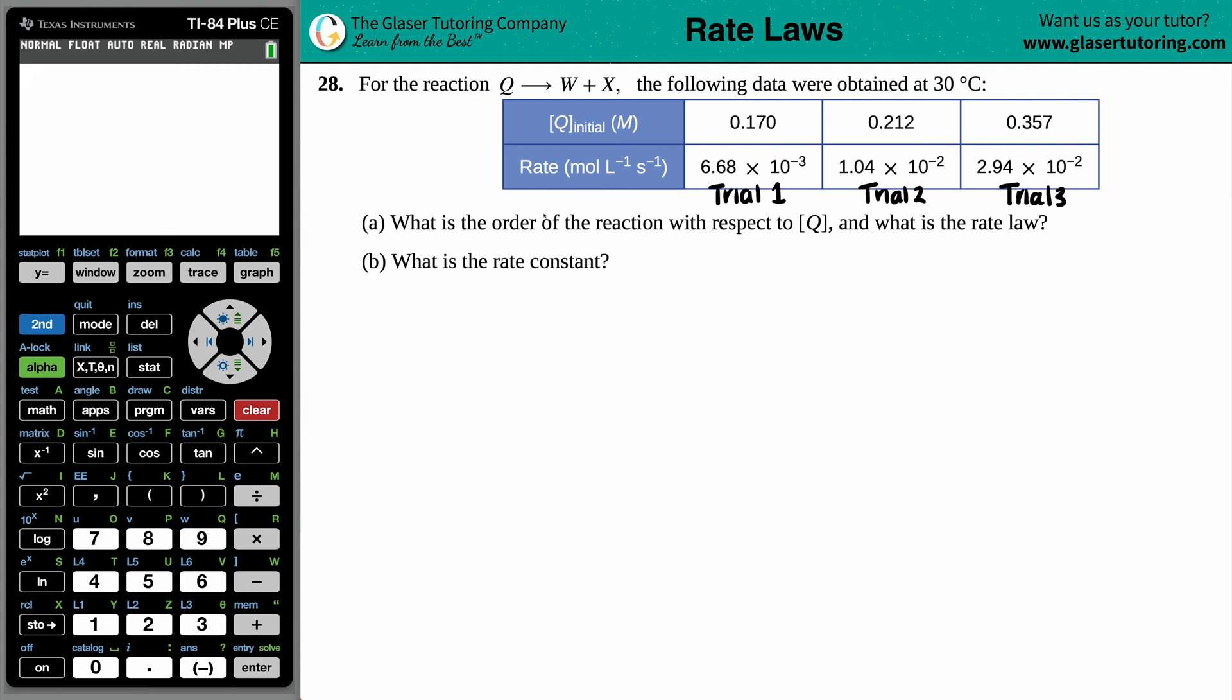Now for this specific reaction, or this specific question, we have to find out what is the order of the reaction with respect to Q, and then what is the rate law, and then from there we could find the rate constant. So we have to find out the rate law. Now the rate law is a general formula. The general rate law formula is always rate, which will equal K, K is the rate constant, times by its reactants raised to the orders. So that's what they mean by what is the order of the reaction with respect to Q - the order is just the exponents.